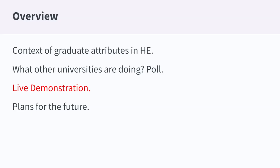The last part of the session I will talk a little bit about what are the plans for the future — something I'm really interested in — and knowing what other institutions are doing with graduate attributes. Here at the University of Sheffield there are some changes: we are moving to a new version of the VLE. How that will impact on how we are using the VLE for badges is still a bit unknown, but I'll explain the possible options we've got open.